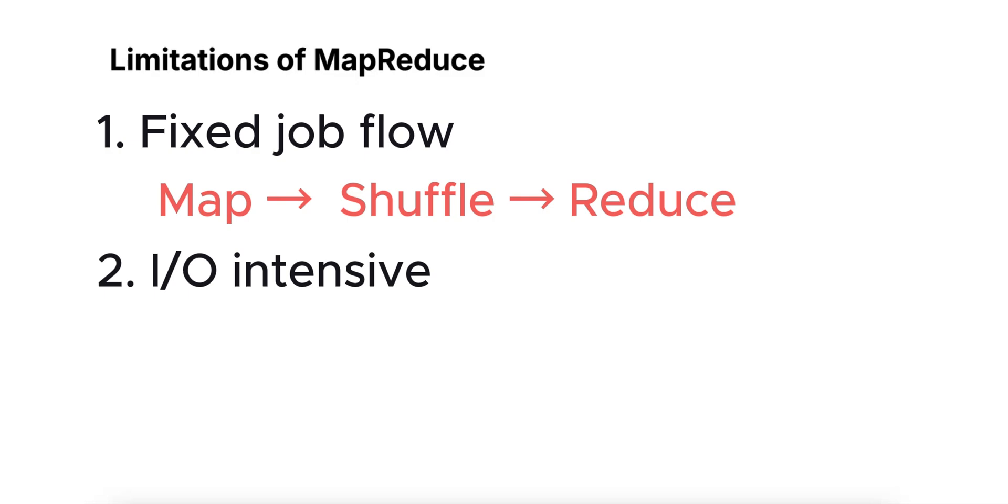Number two is that it's I/O intensive. MapReduce jobs often involve heavy disk I/O operations as intermediate data is written to disk and then shuffled and then read again by the reducers. This can make it slower compared to in-memory processing frameworks, for example, Apache Spark.